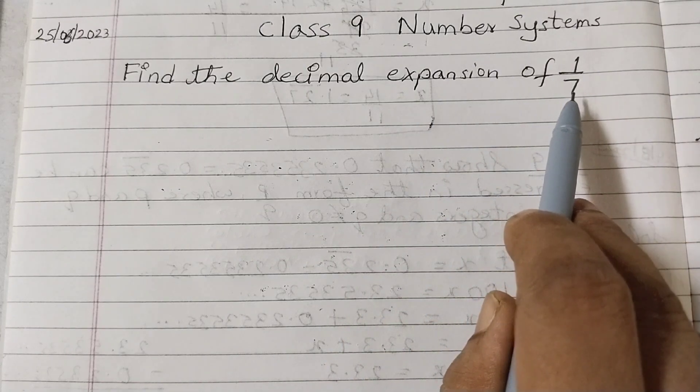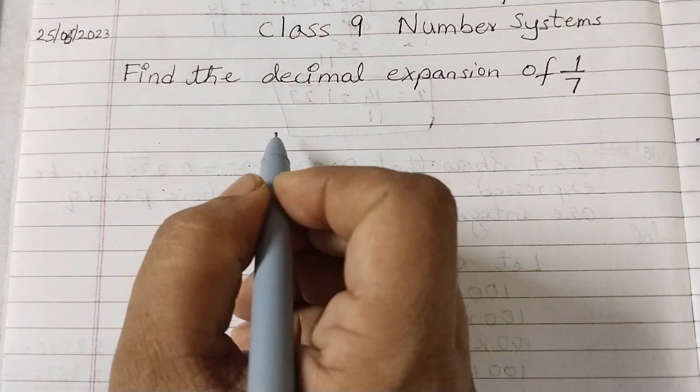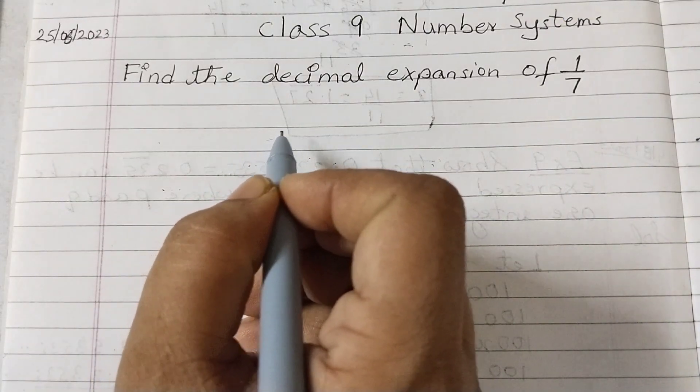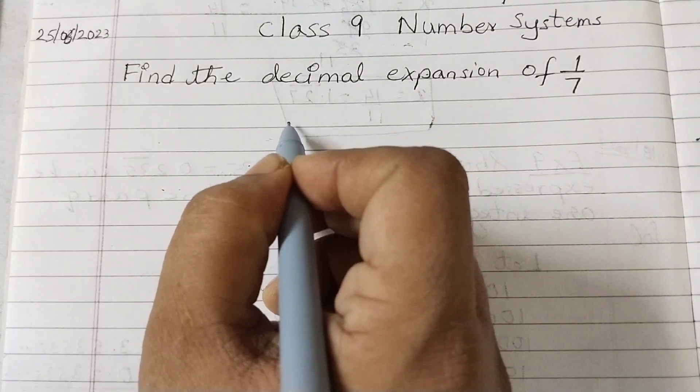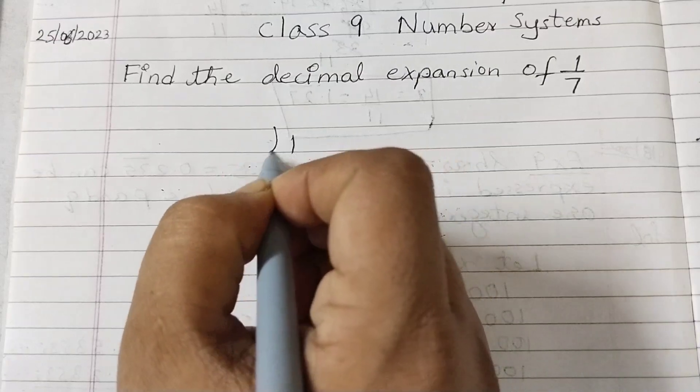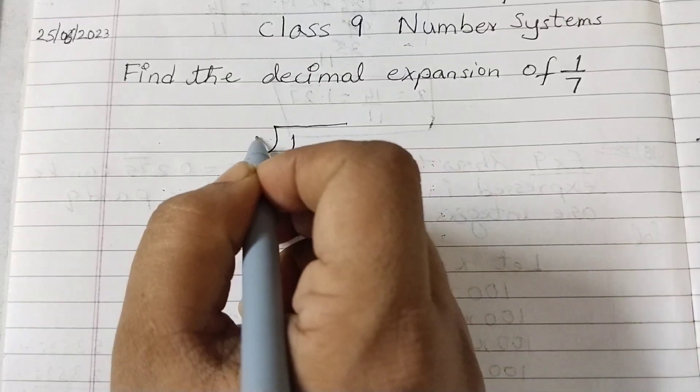1 is the numerator and 7 is the denominator. So when we find the decimal expansion, we will write 1 as the dividend. 1 goes inside and 7 is outside.